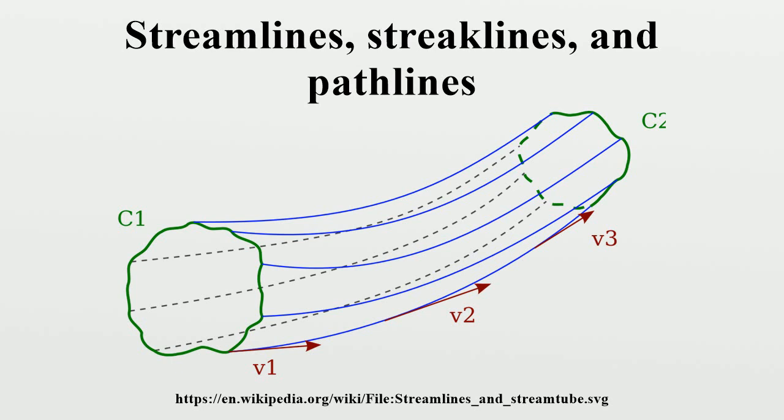Streamlines are a family of curves that are instantaneously tangent to the velocity vector of the flow. These show the direction a massless fluid element will travel in at any point in time.